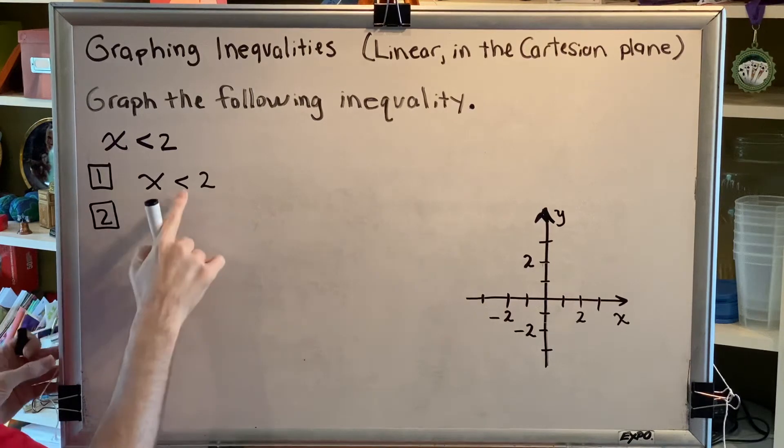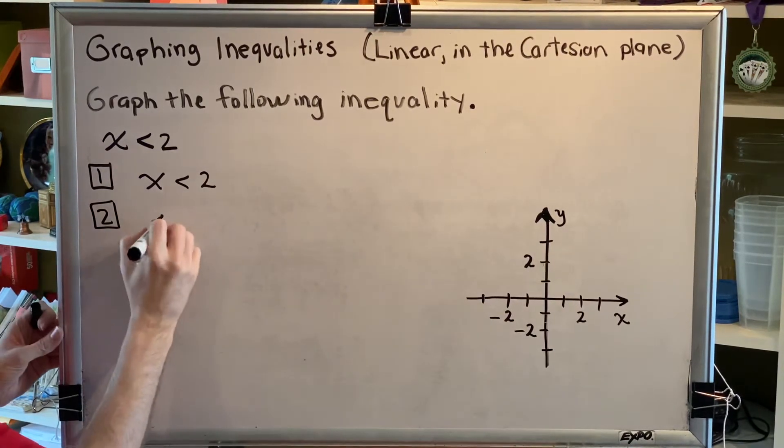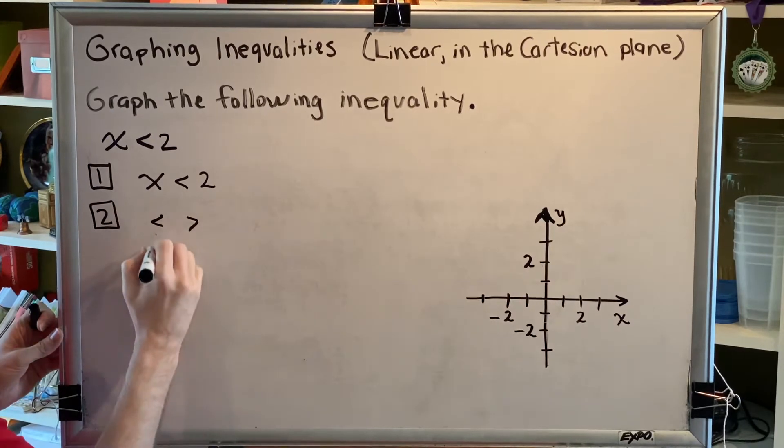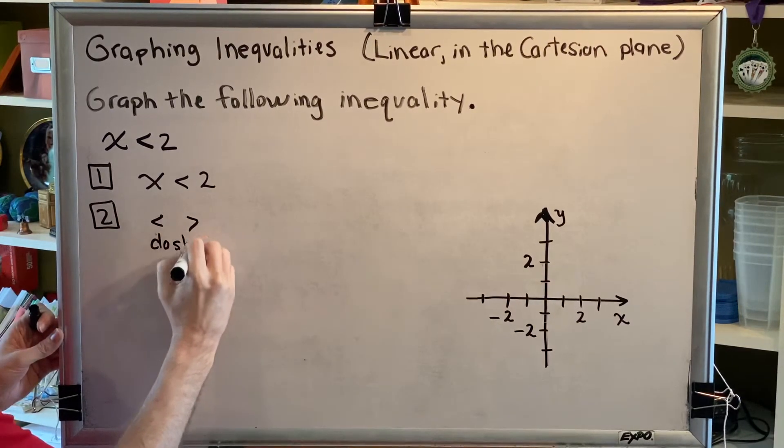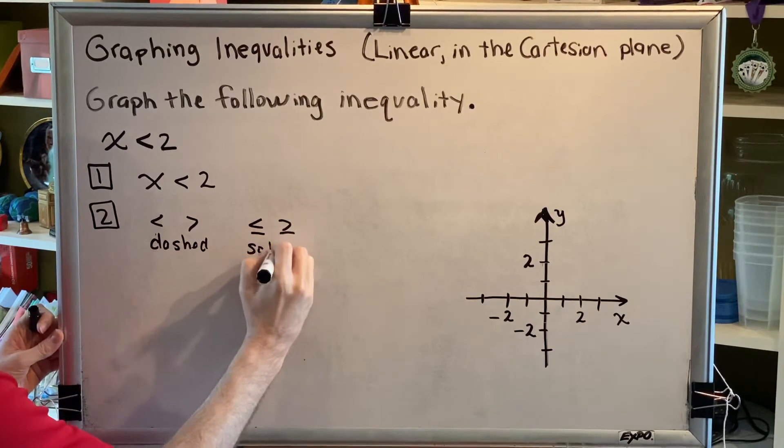Step 2, pretend that your inequality says equals, and graph the line. If it is one of these two inequality types, then use a dashed line. And if it is one of these two inequality types, then use a solid line.